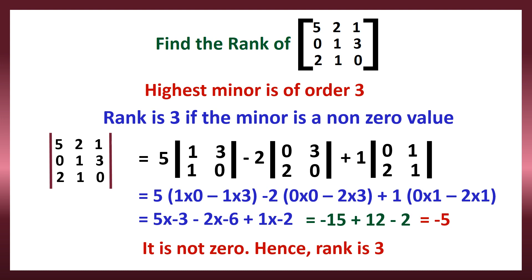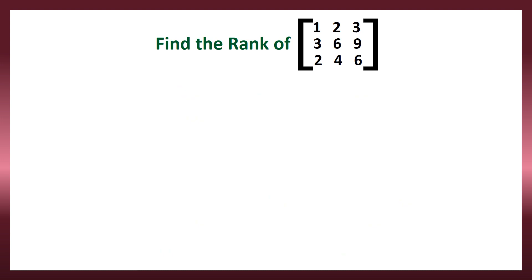The rank is 3 because the highest minor is of order 3 and the determinant value found is a non-zero number. It may be positive or negative — here it is −5, a negative number, but it is not 0. If it is not 0, the rank is confirmed at that order. Now let us check with a different question.